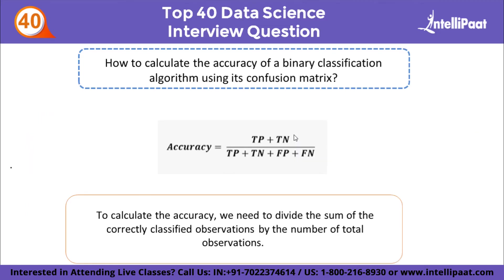How do you calculate the accuracy of a binary classification algorithm using its confusion matrix? Accuracy is a metric used for evaluating classification models. The formula is: Accuracy = number of correct predictions / total number of predictions. To calculate accuracy, divide the sum of correctly classified observations by the total number of observations. Total observations include true positive, true negative, false positive, and false negative. So accuracy = (True Positive + True Negative) / total observations.